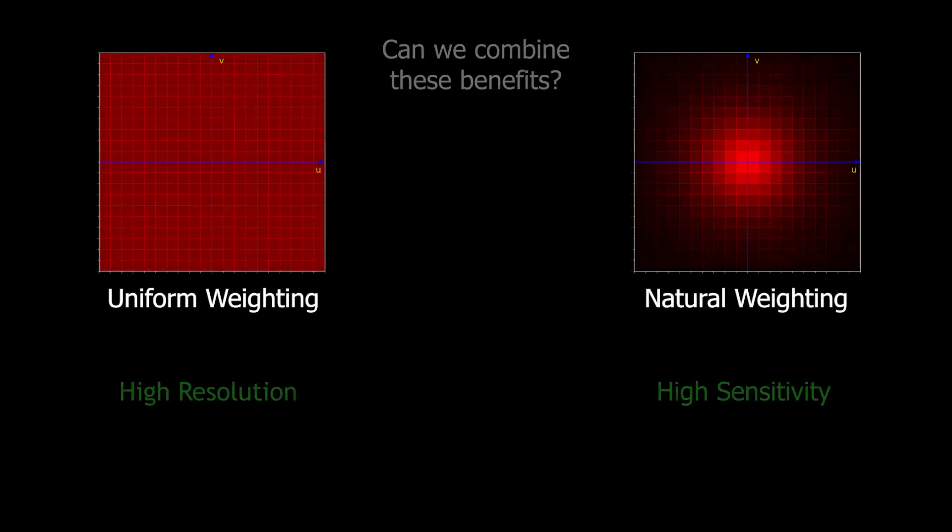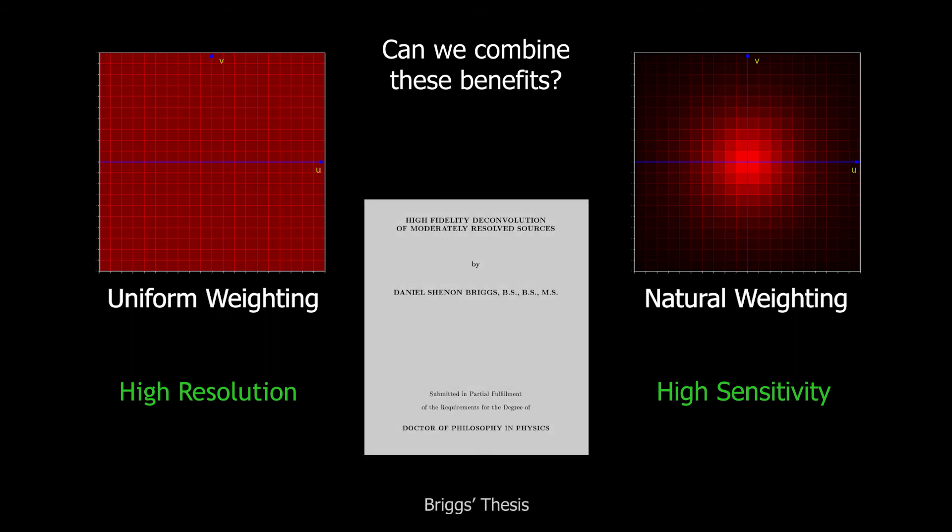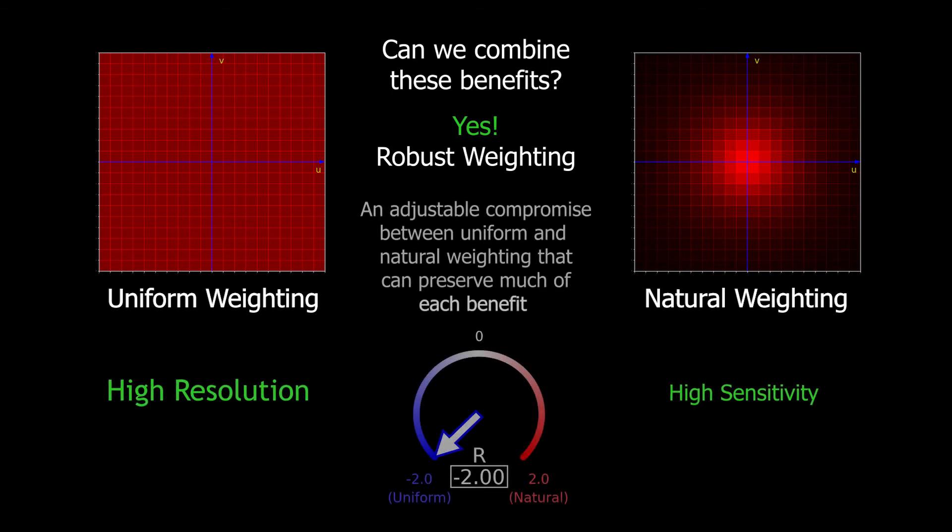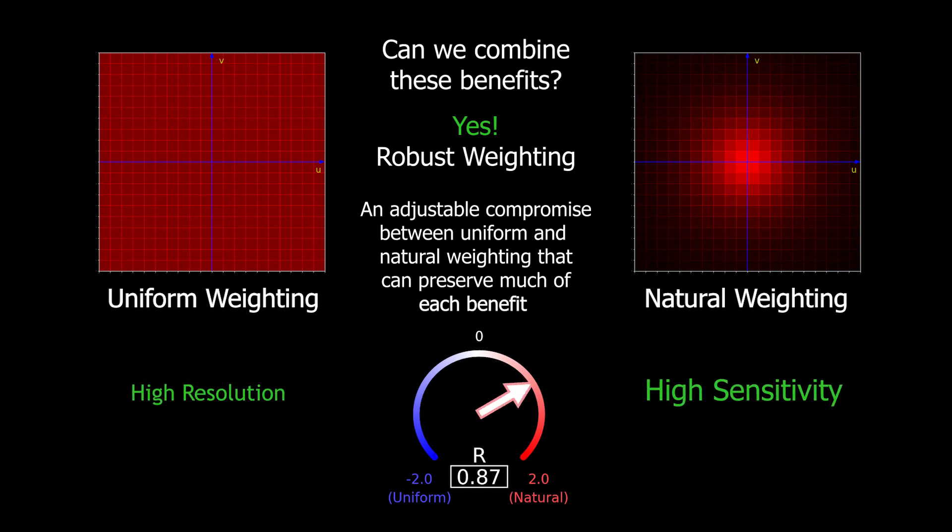But there is a way to combine the benefits of uniform and natural weighting. In his 1995 PhD thesis, Daniel Briggs introduced the idea of robust weighting, also called Briggs weighting. In Briggs' thesis, he describes robust weighting as visibility weighting that varies smoothly from uniform to natural weighting as a function of a single parameter, the robustness R.